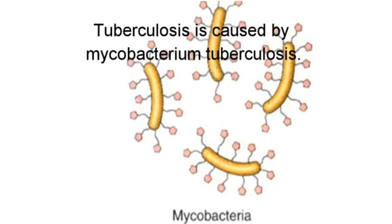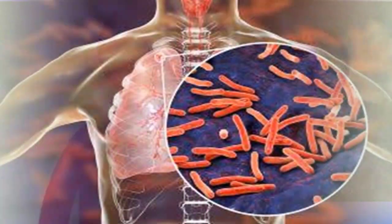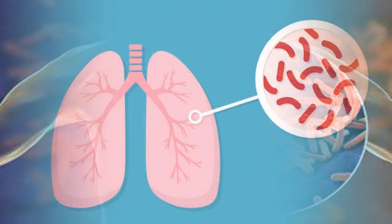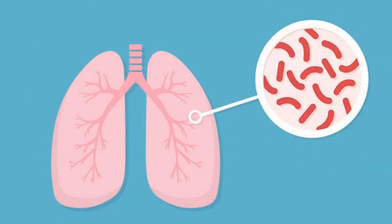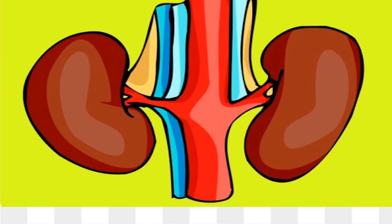TB is caused by bacteria called Mycobacteria tuberculosis. The bacteria can attack the lungs, but TB bacteria can also attack any part of the body, such as the brain and kidneys.